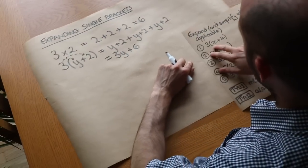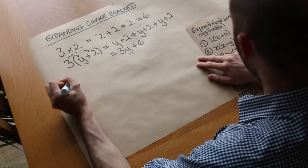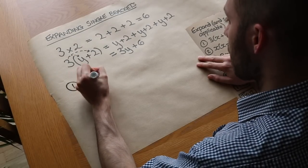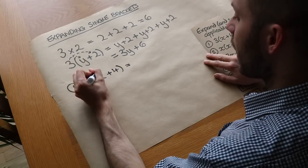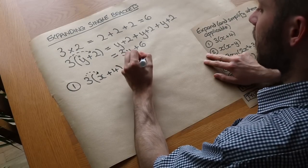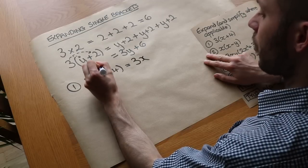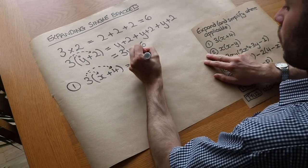So let's do some more examples. I've got 3 lots of x plus 4. So we do the same thing, we've got 3 lots of x, which is 3x, and we've got 3 lots of 4, which is 12.